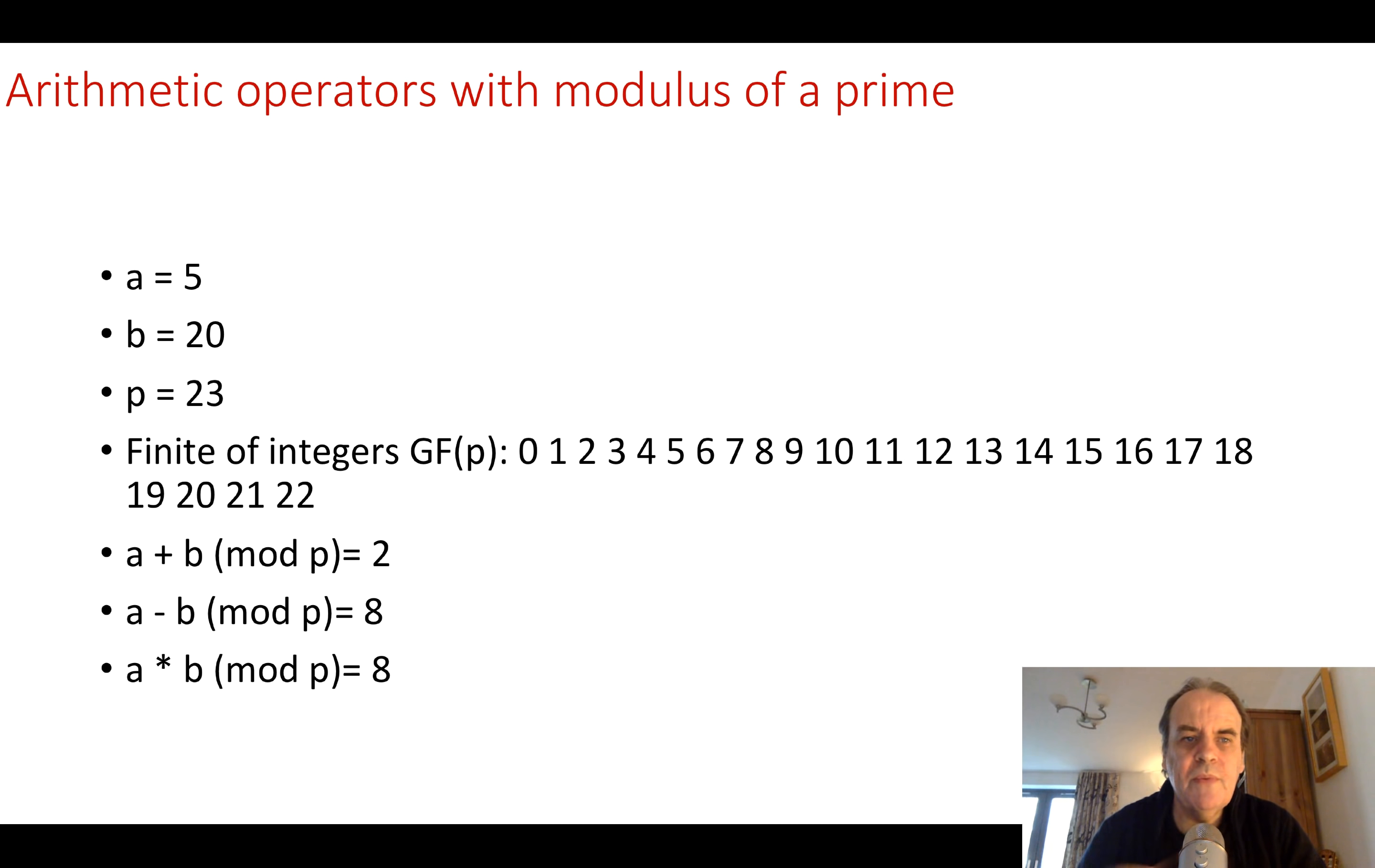Let's take an example with a equal to 5, b equal to 20 and our prime number of 23. So our finite field of integers will be 0 up to 22. So a plus b is 5 plus 20 which is 25 and then we take mod of 23, so we divide and have 1 remainder 2. So the result is 2.